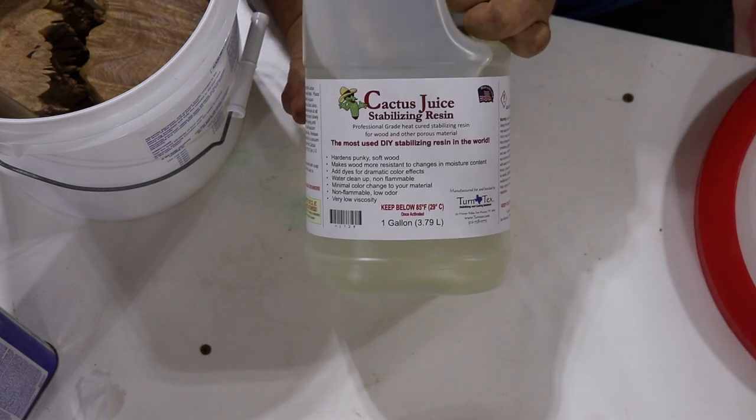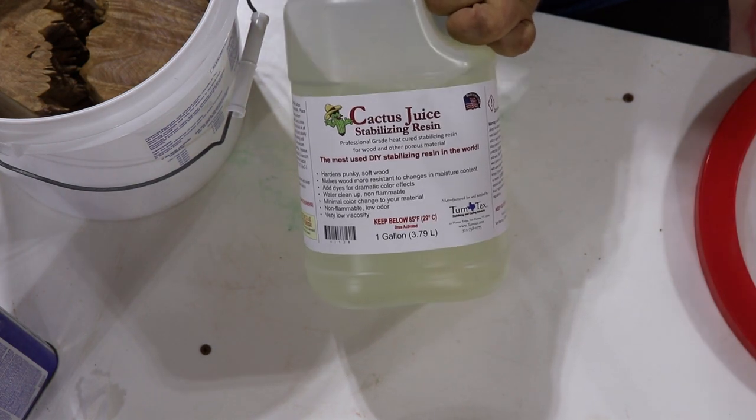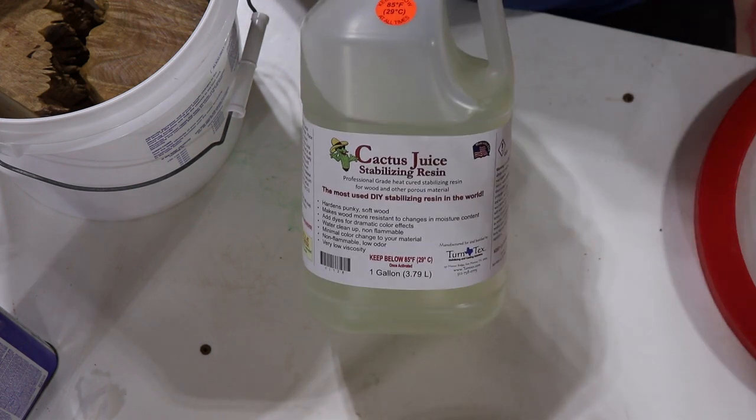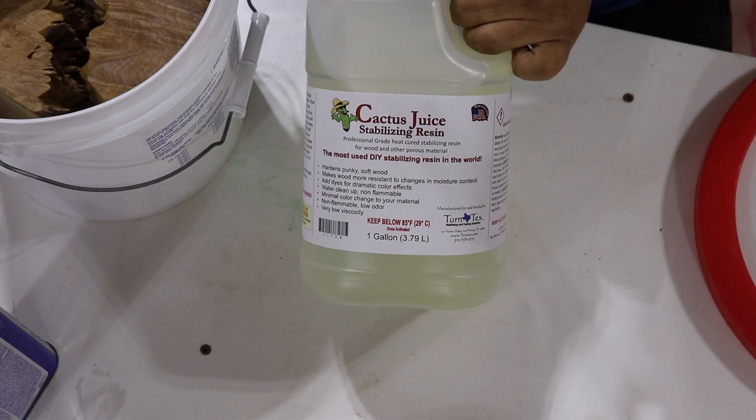I'm going to use cactus juice, which is a stabilizing resin. It's a two-part - you dump the activator, the entire contents of the activator, in this gallon. Once you activate it, it's good for six or eight months before it goes bad.